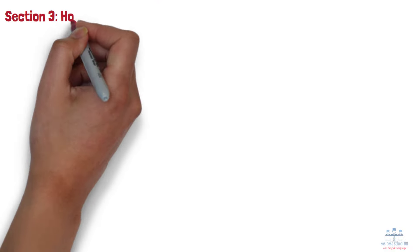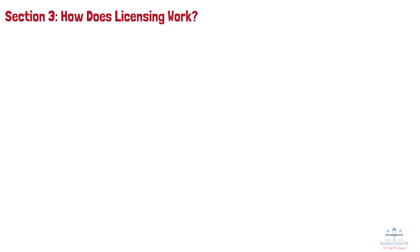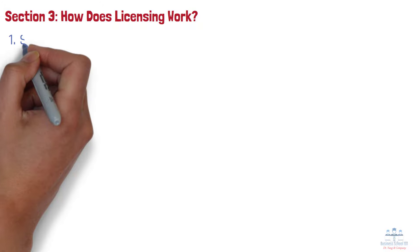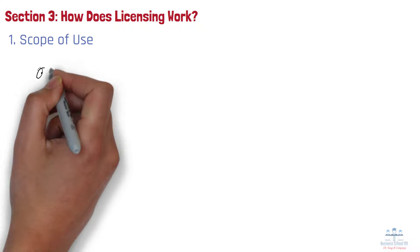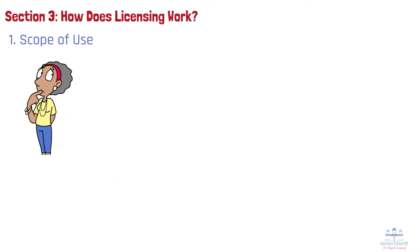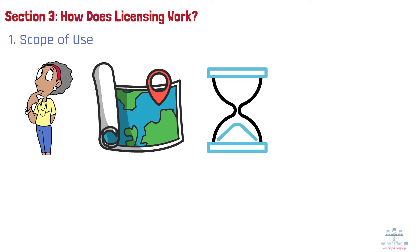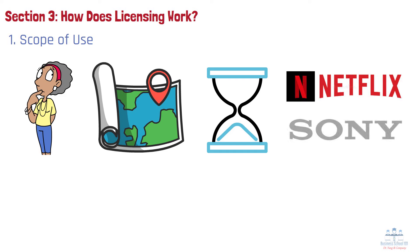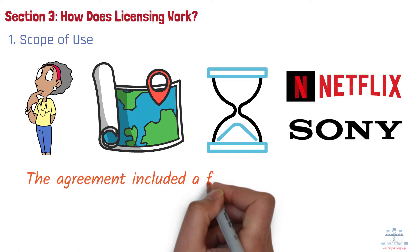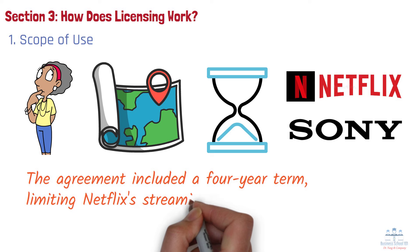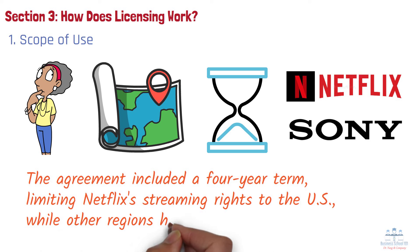Section 3: How does licensing work? Licensing typically involves a formal agreement outlining the terms and conditions of the arrangement. Key components include: Number 1, Scope of use. The agreement normally specifies how the licensee can use the intellectual property, such as geographic restrictions or the duration of use. For example, Netflix signed a deal with Sony Pictures to stream Sony's films exclusively in the U.S. for a set period after their theatrical release. The agreement included a four-year term, limiting Netflix's streaming rights to the U.S. while other regions had different distributors.